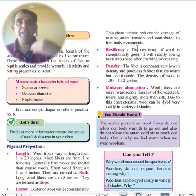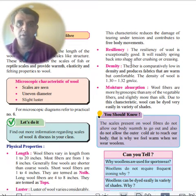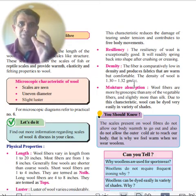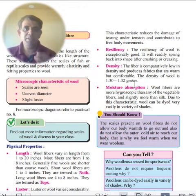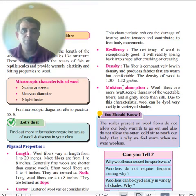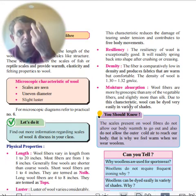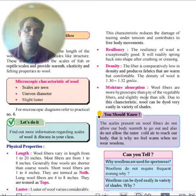Resilience is wool's ability to spring back to its normal shape. Density is low — approximately 1.3 grams per cubic centimeter — making it very soft and compressible. Moisture: wool fibers are more hygroscopic than any vegetable fiber and slightly more than silk, allowing them to absorb dyes easily and become colorful.